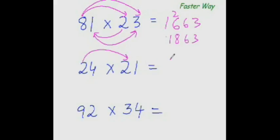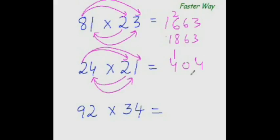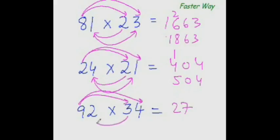Next one: 2 times 2 is 4. 2 times 1 is 2 and 2 times 4 is 8; 8 plus 2 is 10, and 4 times 1 is 4. The answer is 504. Next one: 9 times 3 is 27. 9 times 4 is 36 and 3 times 2 is 6; 36 plus 6 is 42, and 2 times 4 is 8. The answer is 27 plus 4 is 3128.